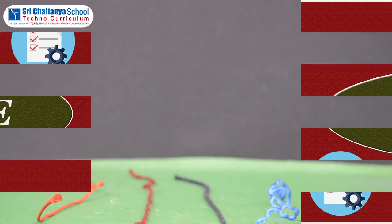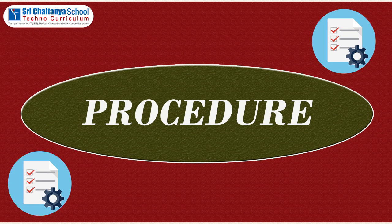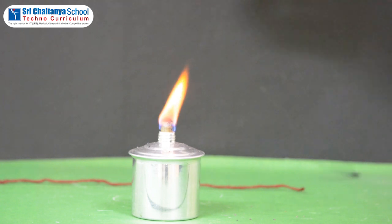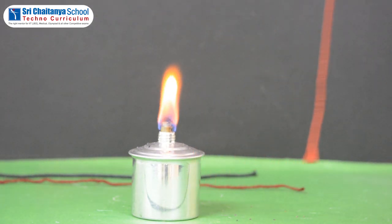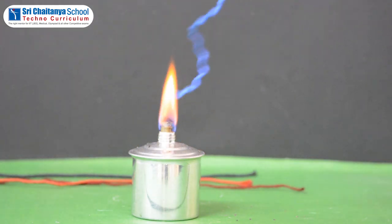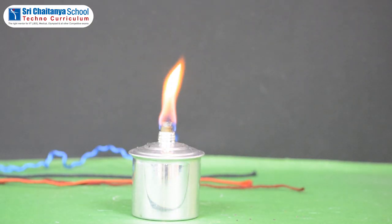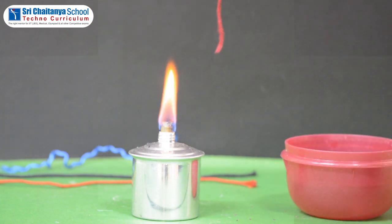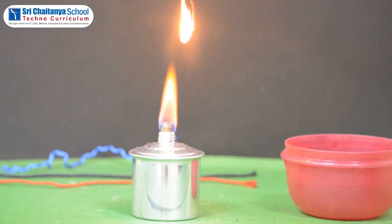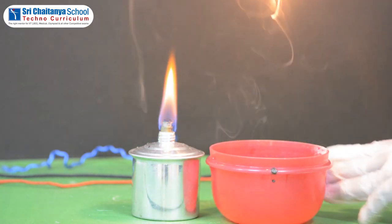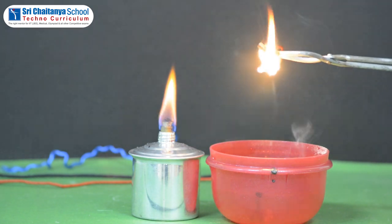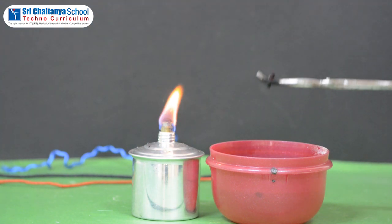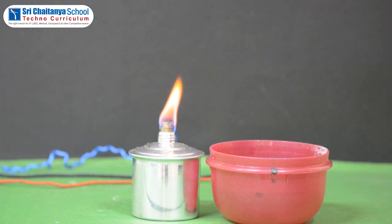Now it is time to see the procedure. Collect different kinds of fabrics like wool, cotton, silk, and synthetic like nylon. Hold a small piece of wool with tongs and burn its one end with a spirit lamp. For safety, you can keep a bowl of water aside. Check the following: how does the fabric catch fire, and the smell after burning. Record your observations in the table.